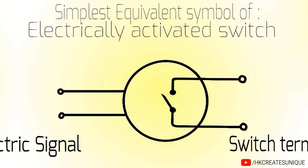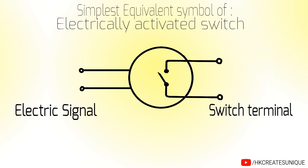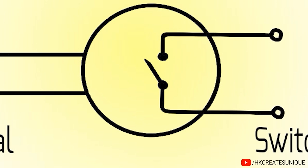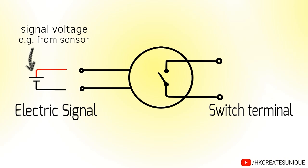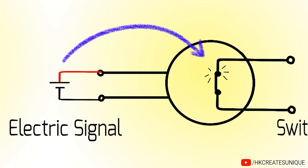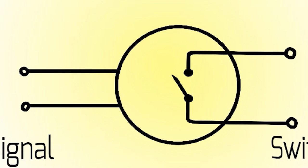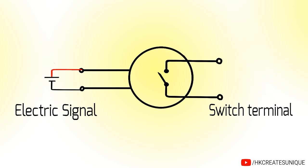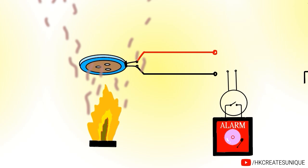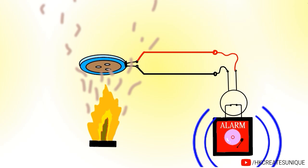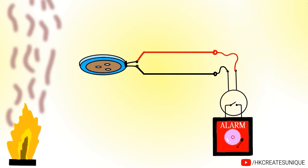This is the simplest equivalent symbol of an electrically activated switch. The switch is normally in open position. But when a signal voltage is applied, the switch gets closed like this. Removing the signal, the switch comes back to the normally open position. So if we connect it in the fire alarm, voltage signal from the sensor can turn the alarm on or off. This way a fire alarm can be made.